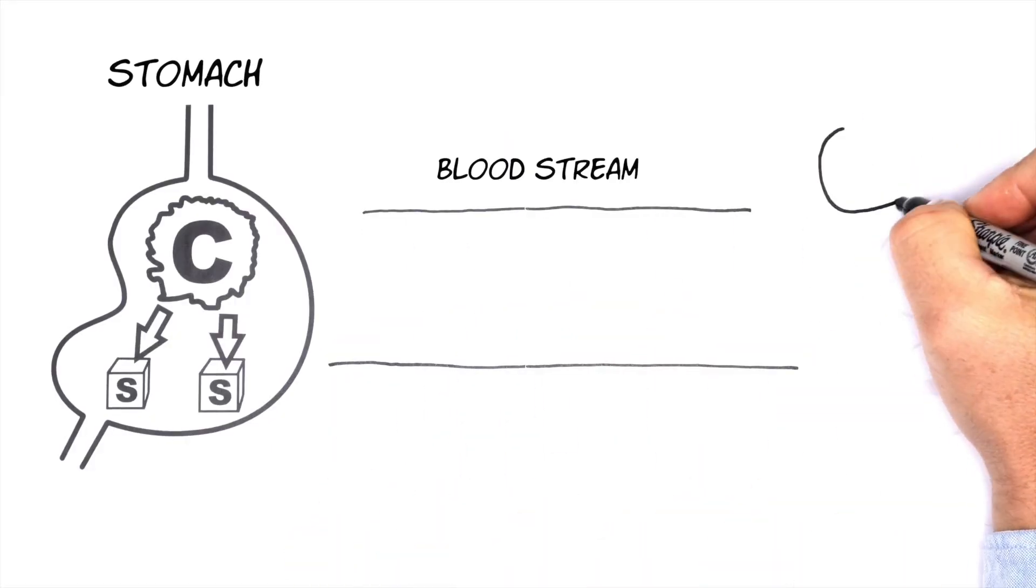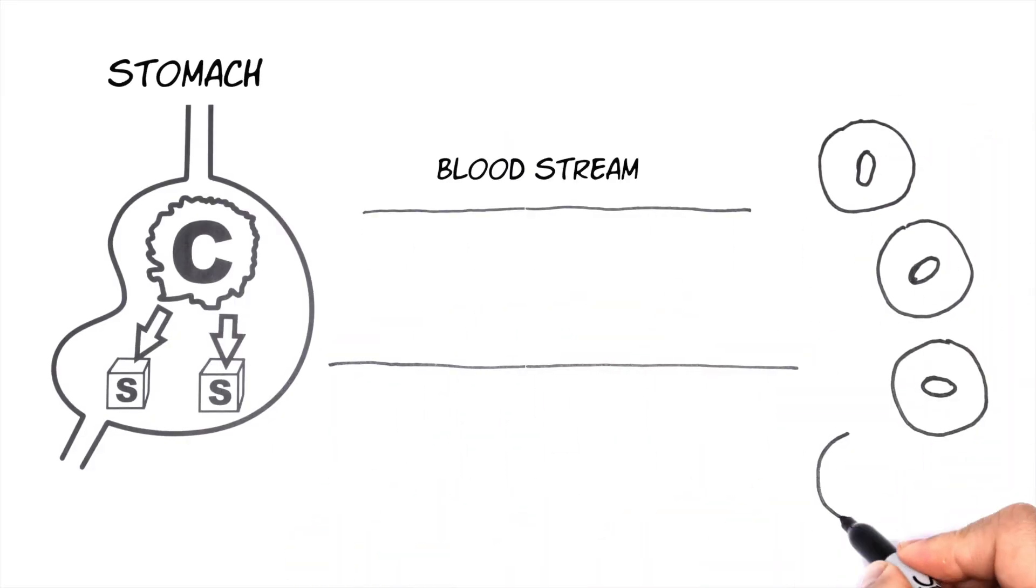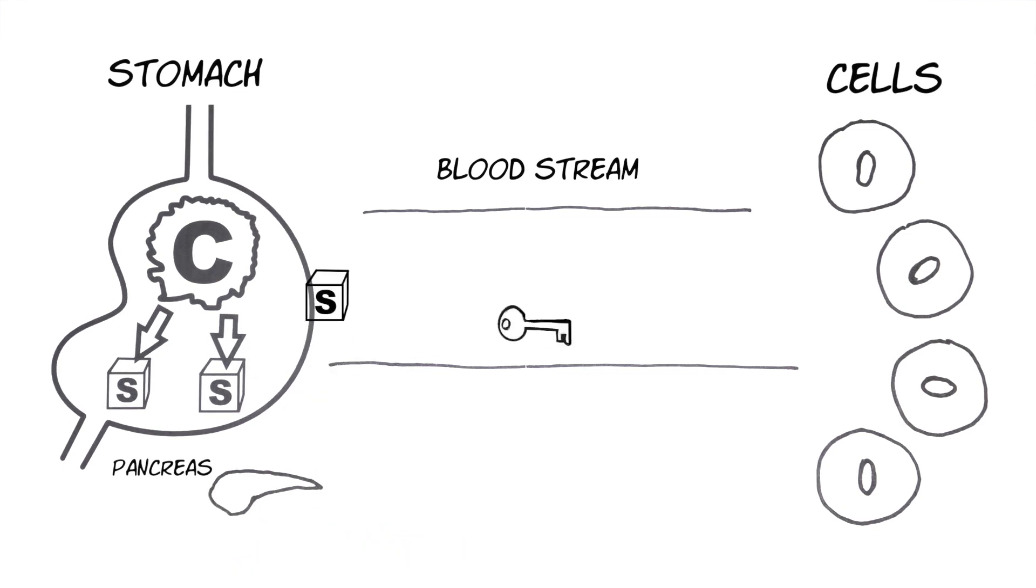Sugar travels from the stomach through the bloodstream to muscles and fat cells. But here's the catch. Sugar can't enter the cells without the help of a hormone called insulin, which is produced by the pancreas.